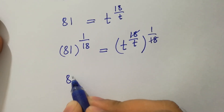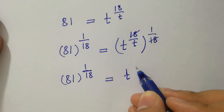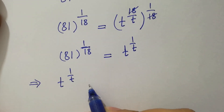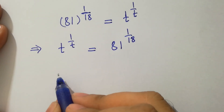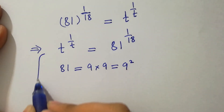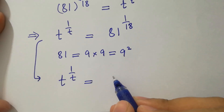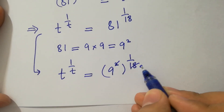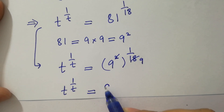We have 81 to the power 1 over 18 equal to t to the power 1 over t, which is the same as t to the power 1 over t equal to 81 to the power 1 over 18. Since 81 equals 9 times 9, and 2 times 9 is 18, it becomes t to the power 1 over t equal to 9 to the power 1 over 9.